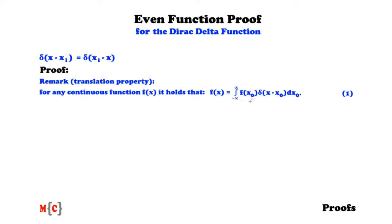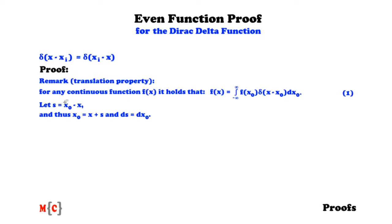Now for ease let's introduce a helper variable s, and s is defined as the difference between x_0 and x, so x_0 minus x. And thus if we rewrite this we have x_0 is equal to x plus s, and that ds is equal to dx_0. This is because the first derivative of s with respect to x_0 is equal to 1.